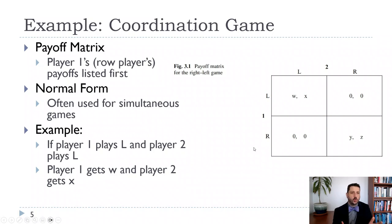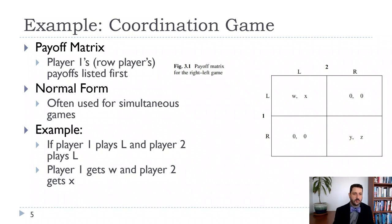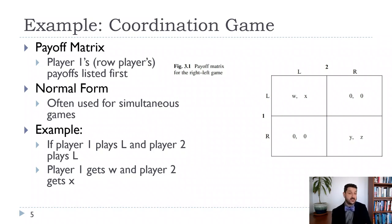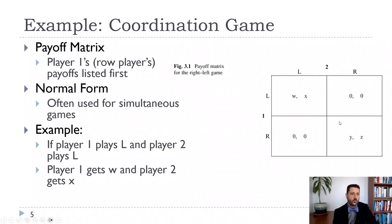This is called a coordination game because both players get positive payoffs — assuming W, X, Y, and Z are all positive — when they both choose the same thing. But since it's a simultaneous game, we can't see what the other player is choosing, so we'll talk about different ways to think about where we end up.